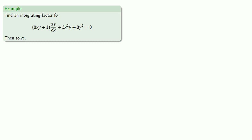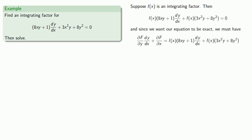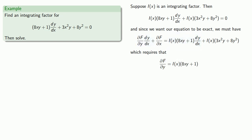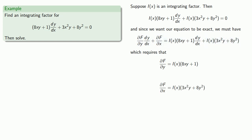So let's see if we can find an integrating factor. Suppose i of x is an integrating factor. Then we can multiply our equation by i of x. Since we want our equation to be exact, this expression must equal the total differential of some function capital F. This requires that the coefficient of dy/dx be the partial of F with respect to y, and the leftover bits be the partial of F with respect to x. Because we want exactness, the mixed partial derivatives have to be equal. So let's find those mixed partials.